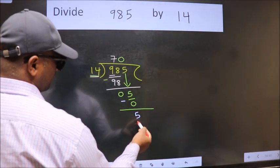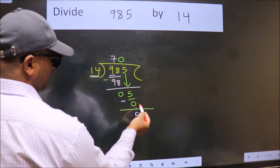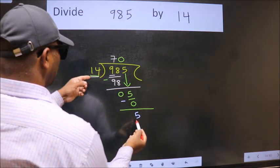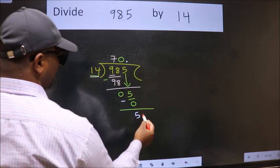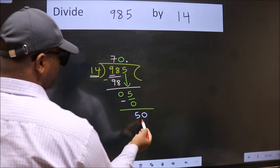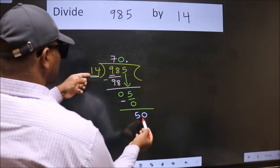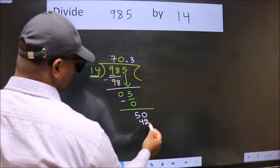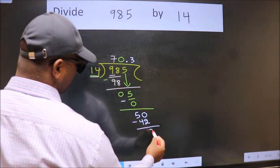Over here we did not bring any number down. So now we can put dot and take 0. So 50. A number close to 50 in 14 table is 14 threes, 42. Now we subtract. We get 8.